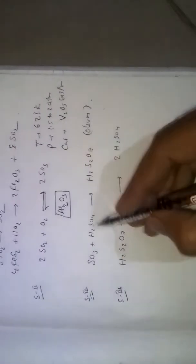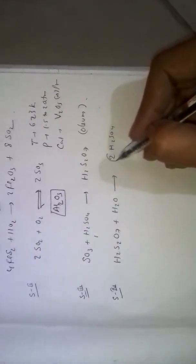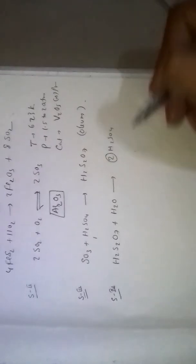Here we use 1 mole sulphuric acid initially, and finally we get 2 mole sulphuric acid. That means 1 mole sulphuric acid is formed.